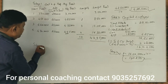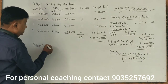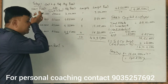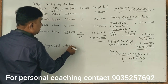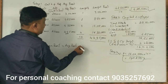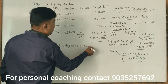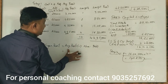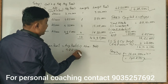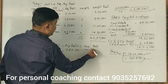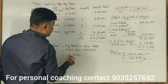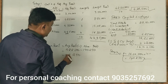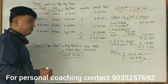Step 4: Super profit = average profit minus normal profit. Average profit is ₹4,28,500 minus normal profit ₹1,40,250 equals ₹2,88,250.